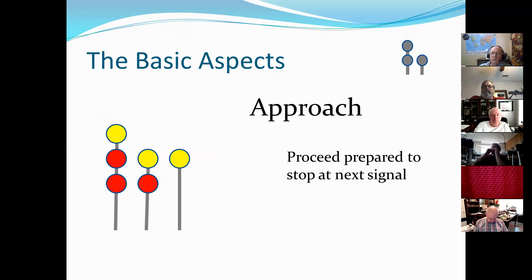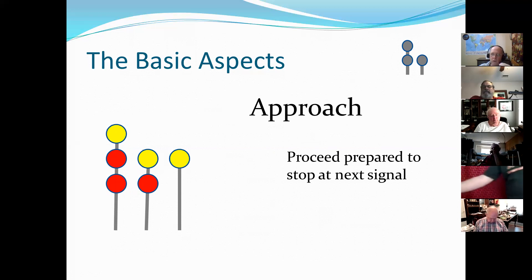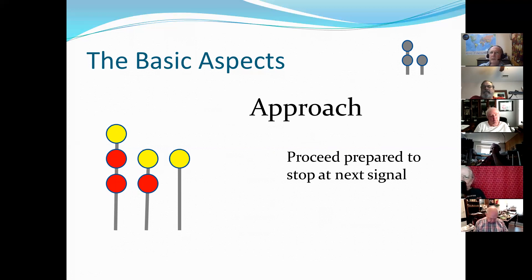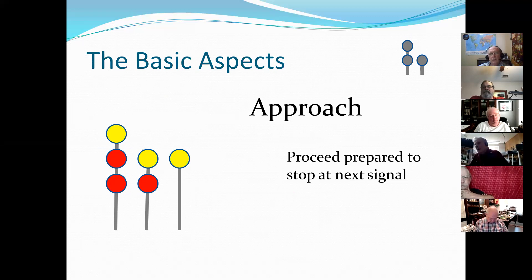Approach: I think we all know what approach means — proceed prepared to stop at the next signal. Most of us have been exposed to automatic block signals where green means clear — the next two blocks ahead are clear, so you can go at authorized speed. Then you have the approach, which means there's one clear block ahead of you but something in the second block. So you need to approach the next signal prepared to stop.